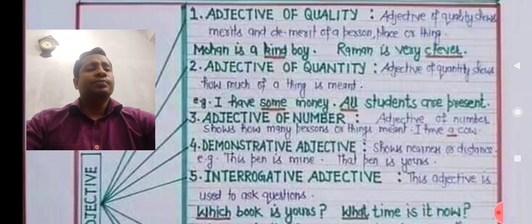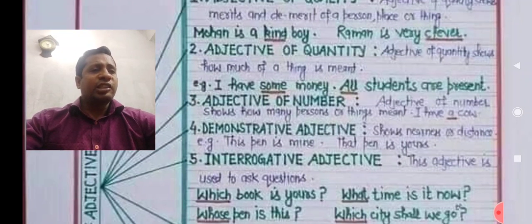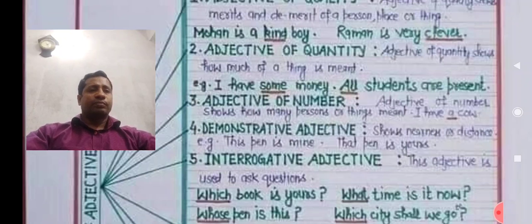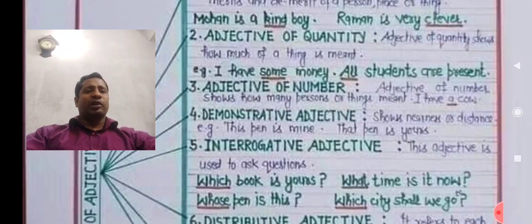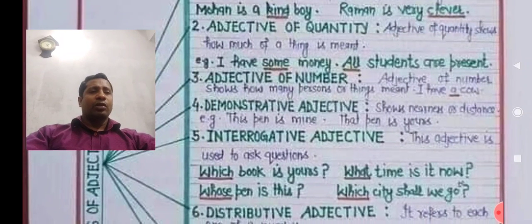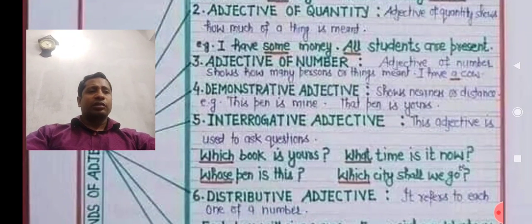Adjective of quantity shows how much of a thing is measured. For example: 'I have some money' — 'some' is the quantity of money. 'All the students' — 'all' is the quantity of students. Words like some, all, many, few, much are adjectives of quantity.